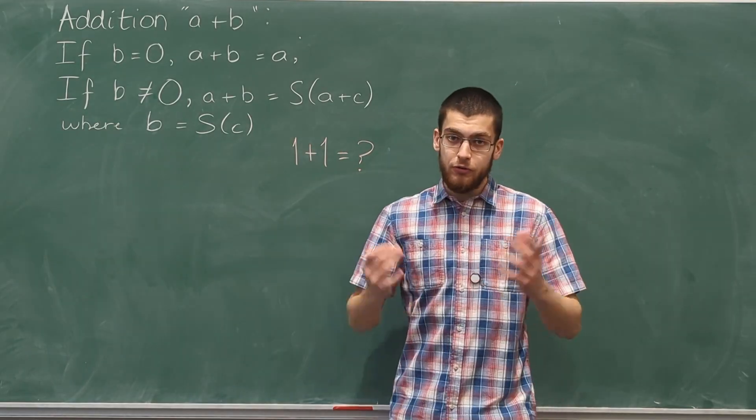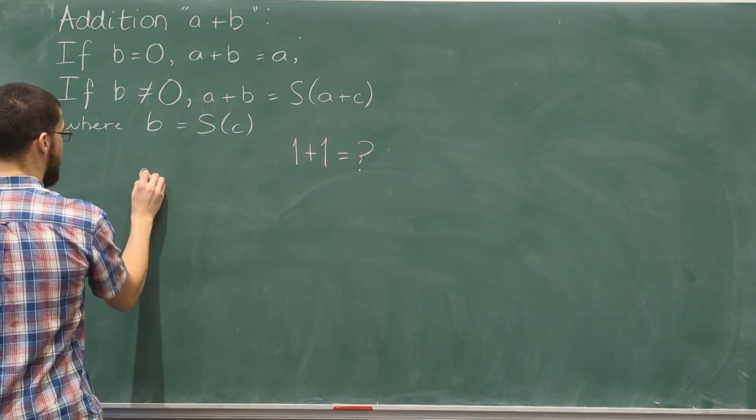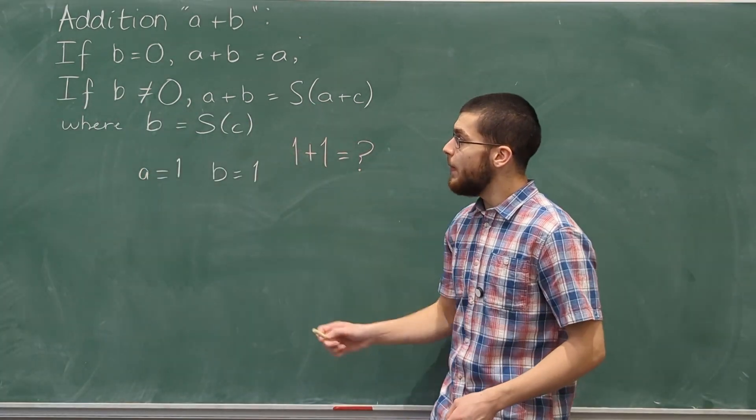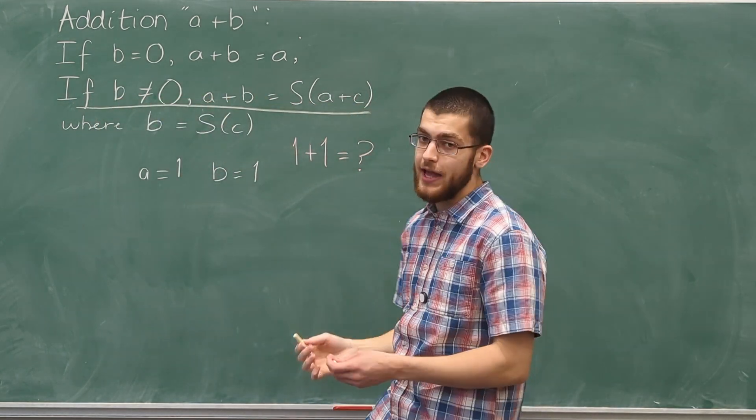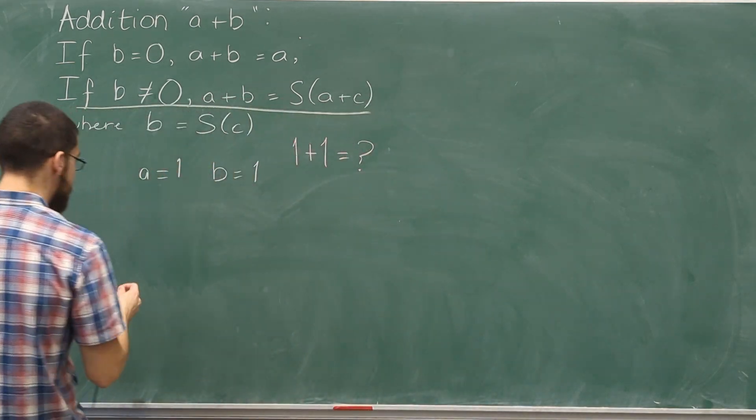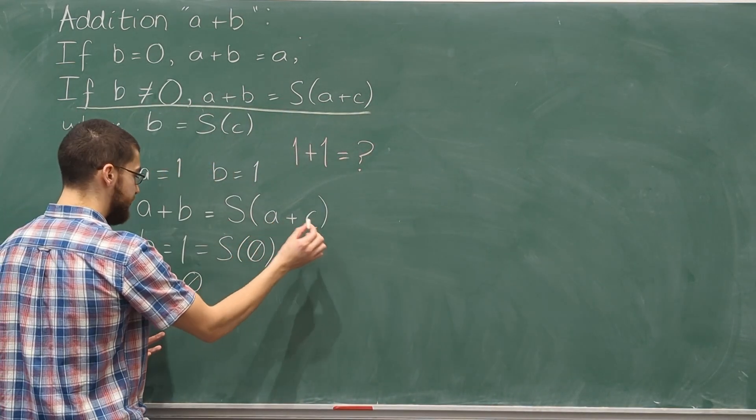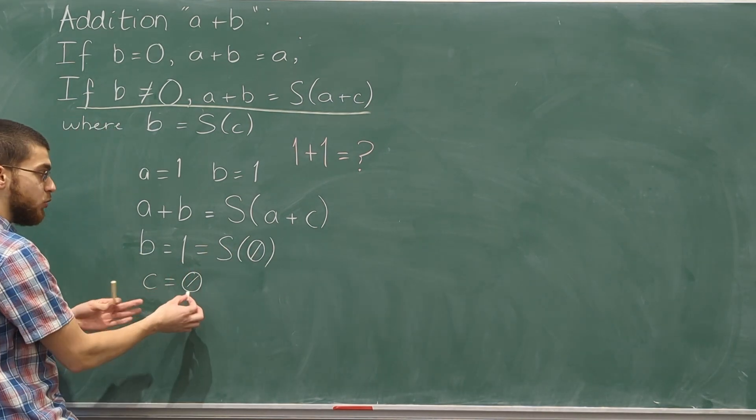Now we've defined our symbols, we want to prove that one plus one equals two. So a is one, and b is one. Using our definition of addition, b is not equal to zero, so a plus b equals the successor of a plus c, where b is the successor of c. So a plus b equals the successor of a plus c, and since b is one, which is the successor of zero, c must equal zero.